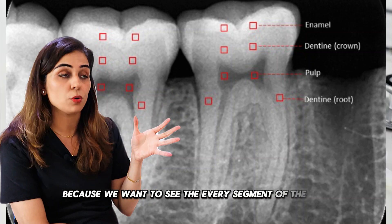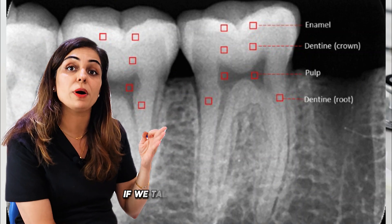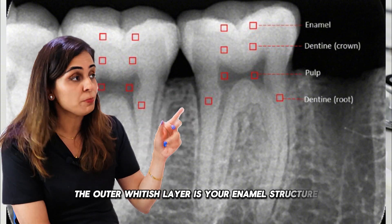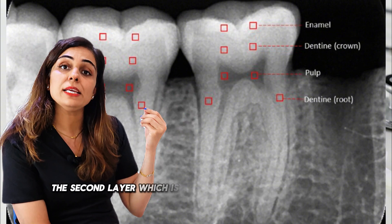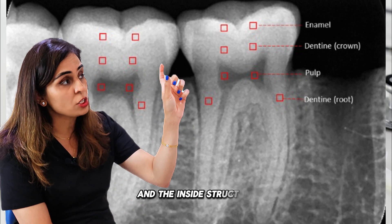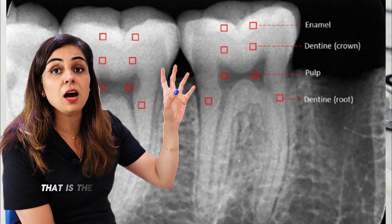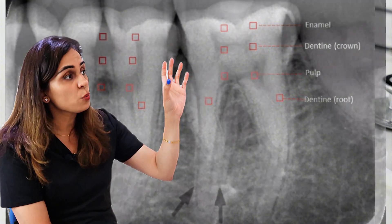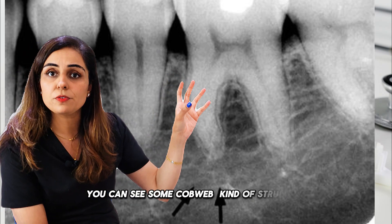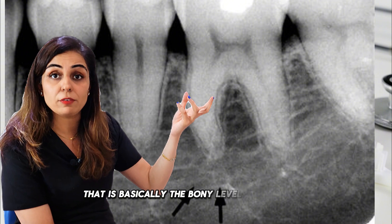We can see the teeth — the teeth have three major shades when we talk about colors. The outer whitish layer is your enamel structure. The second layer, which is slightly gray in color, is your dentine. The inside structure, which looks quite dark or very black in color, is the heart of the tooth, also called the nerve of the tooth. Right in between your teeth you can see a cobweb-like trabecular structure — that is basically the bony level of the tooth.